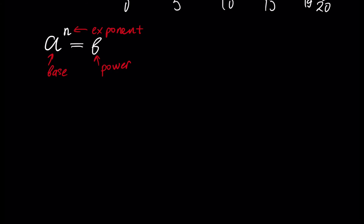How is this operation — rising a number to a power — defined? For easy explanation, we can define it as several multiplications. For example, 2 to the power of 3 is a multiplication done several times.